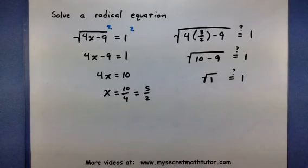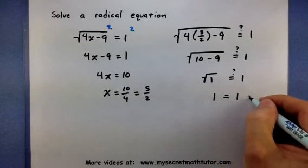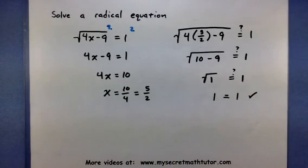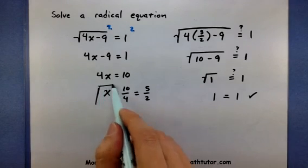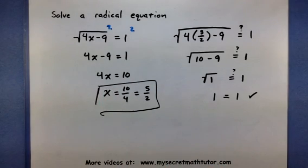And, of course, the square root of 1 is 1. So it looks like this guy really does check out, and we can keep our solution that says x is equal to 5 halves.